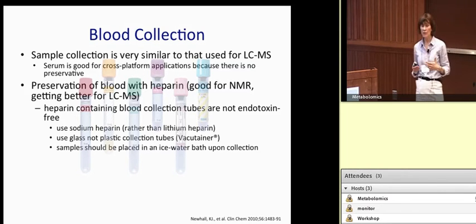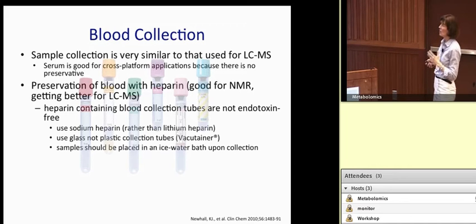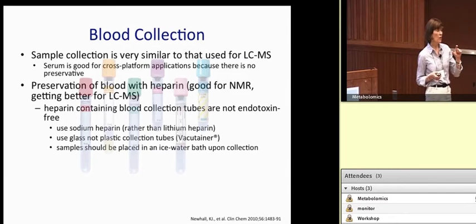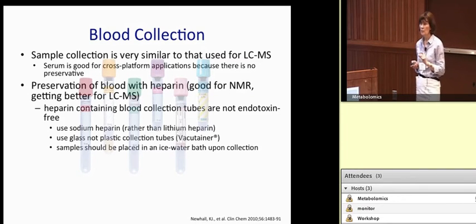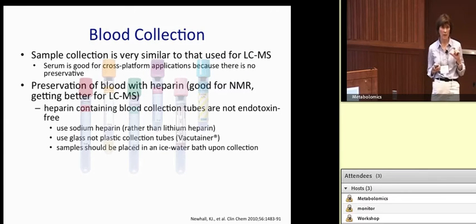We're advocating the use of whole blood now for metabolomics. Regarding heparin use, we do prefer sodium heparin rather than lithium heparin, glass over plastic, and just keep in mind that if you are using vacutainer tubes — which are commonly used in the clinic — the heparin in those tubes is not endotoxin-free. So expeditious handling of your blood collection samples is important: keep those samples cold and handle them quickly. We recommend immediately putting them into an ice water bath.